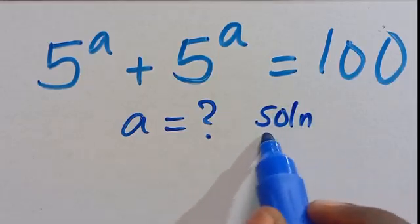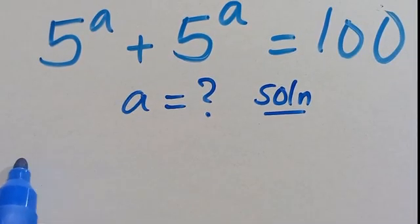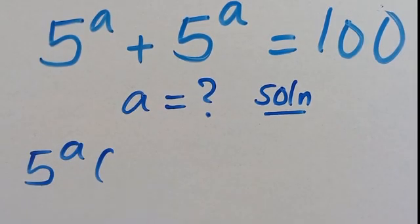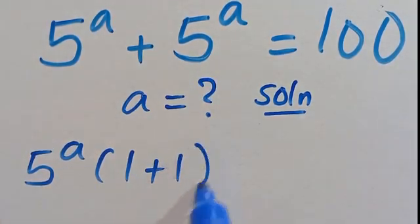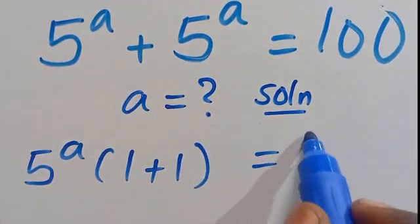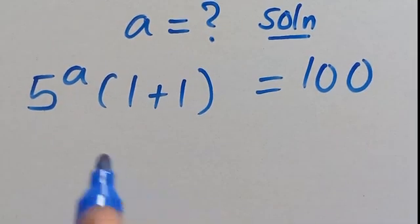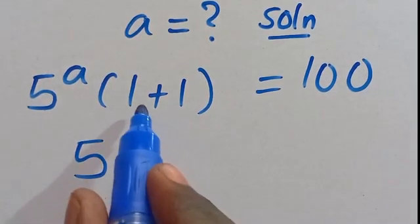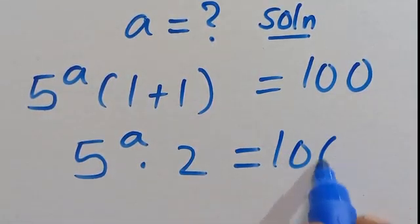Let's find the solution. So 5 to the power of A is common — we can factor it out to be 5 to the power of A, open bracket: this divided by this will be 1, plus this divided by this will also be 1, then equals 100. So from here we have 5 to the power of A multiplied by 1 plus 1, which gives us 2, equals 100.